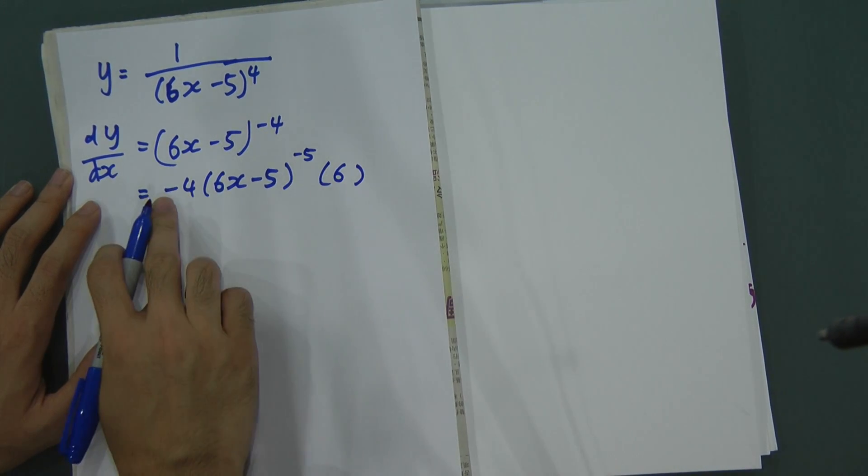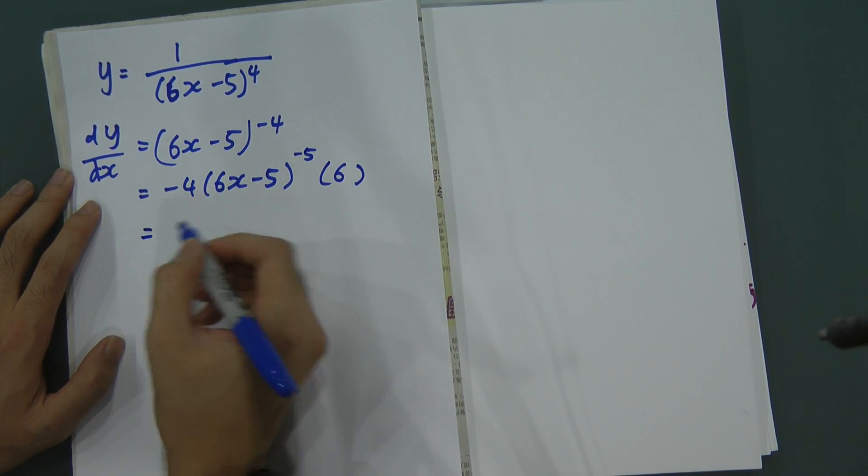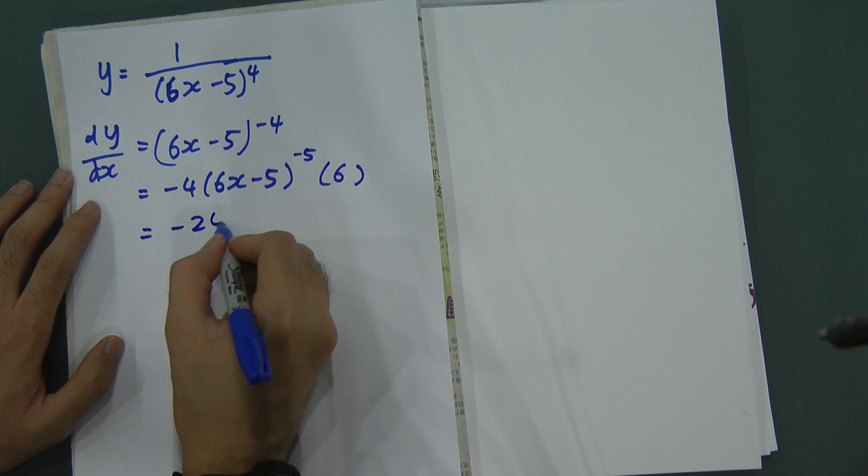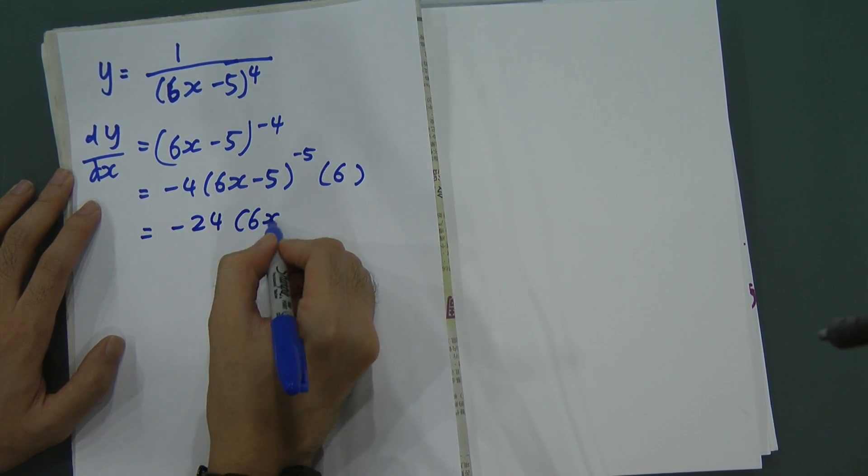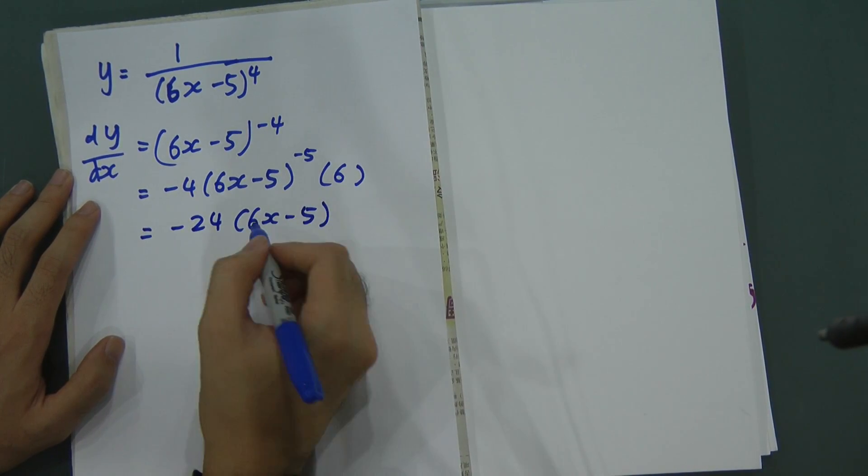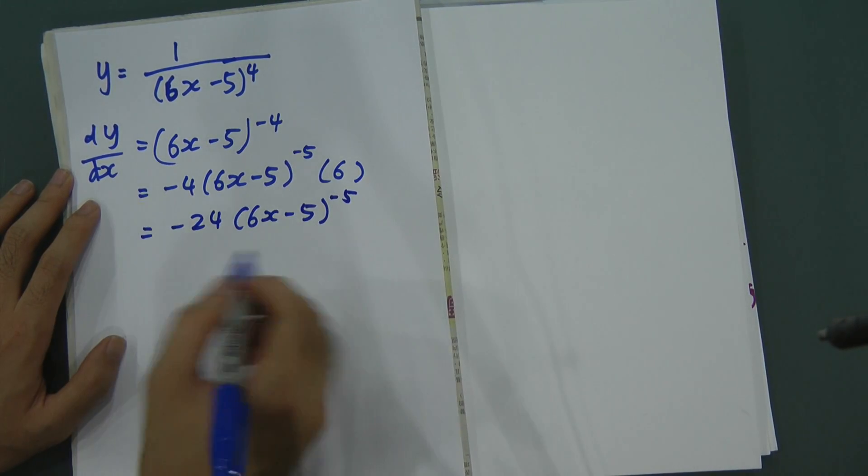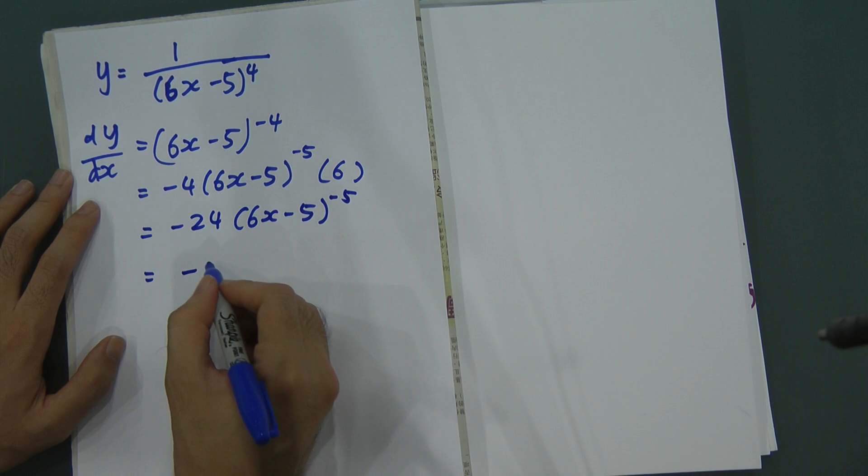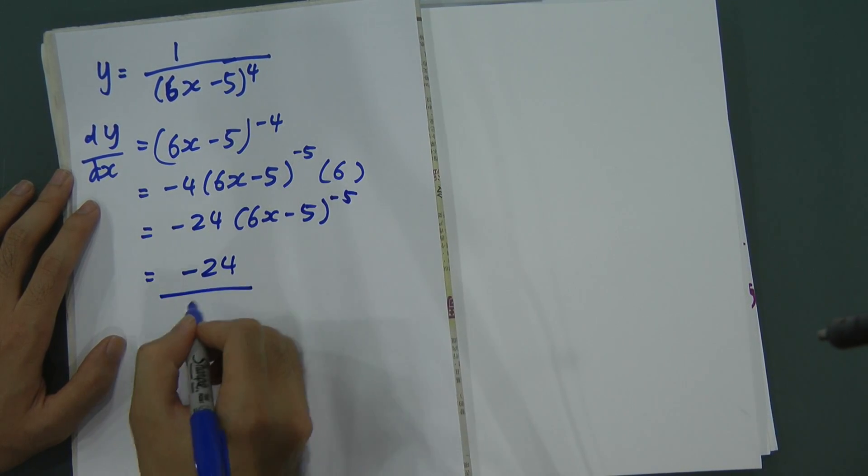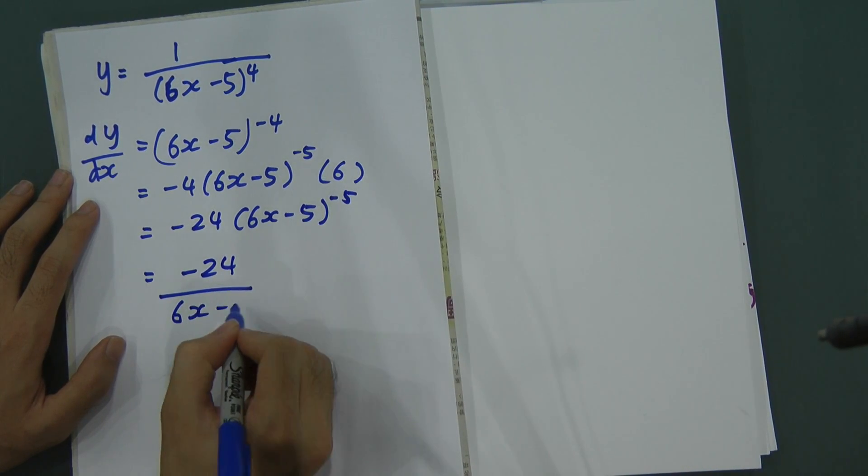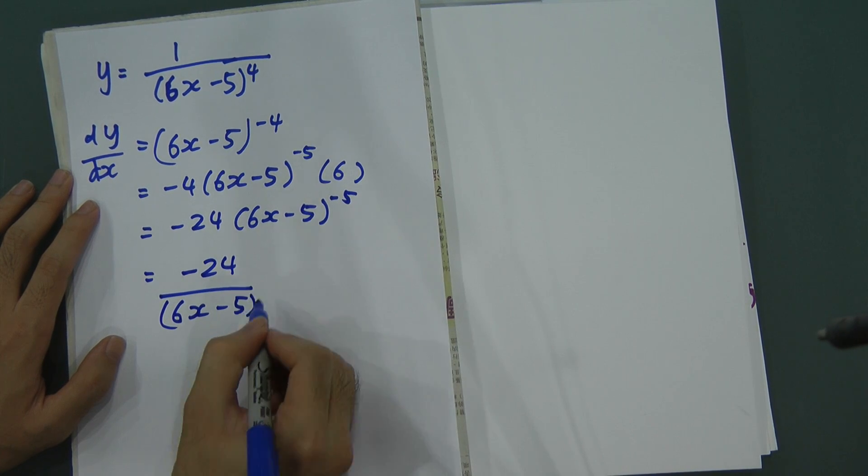So, you 6 have to multiple negative 4. Then, you will get negative 24. 6x minus 5, power of negative 5. Negative 5 will mean 1 over 5. So, therefore, the answer will be negative 24 over 6x minus 5, power of 5.